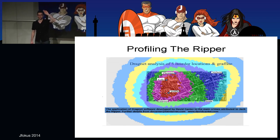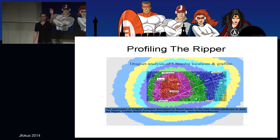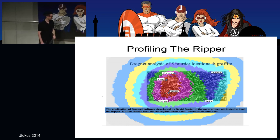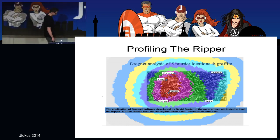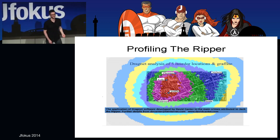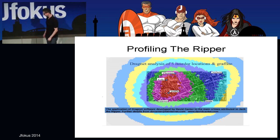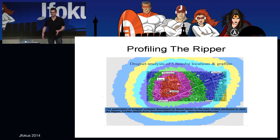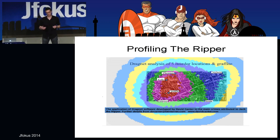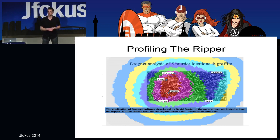Hannibal Lecter is the coolest character — and we can learn a lot from him. Hannibal Lecter sits in his cage, receives information about crimes committed, about the crime scene, and from that information alone he deduces not only a personality profile of the offender, but also his motives and motivations. It's quite amazing.